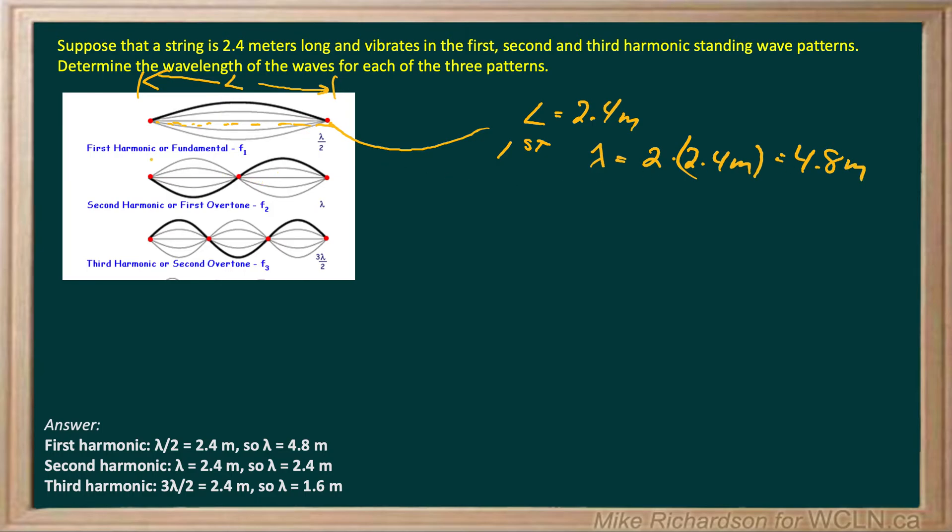Now in the second one, again, the length from here to here is still 2.4 meters. And in this case, if I look at this darker black line, I see a trough and a crest. So that is one full wave.